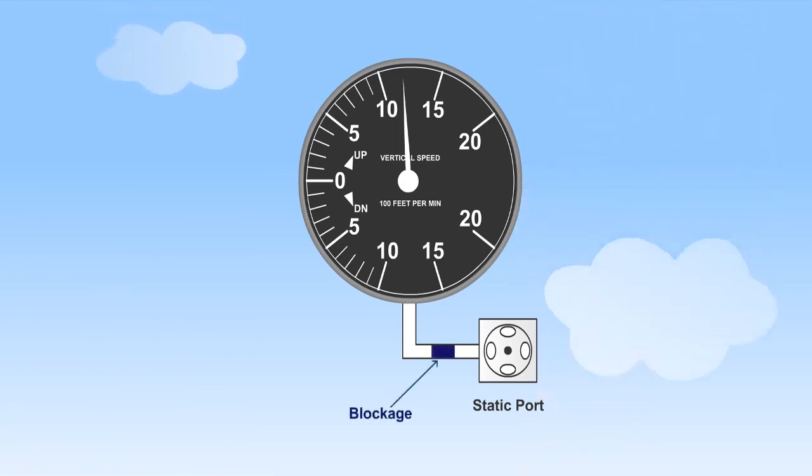A blockage in the static source will result in the VSI ceasing to function. If the blockage occurs during a climb or descent, the VSI indication will gradually return to zero as the differential pressure equalizes. If the blockage occurs in level flight, the VSI will read zero during a subsequent climb or descent.